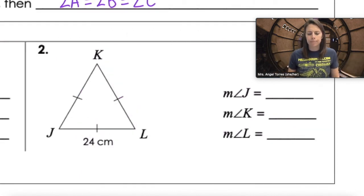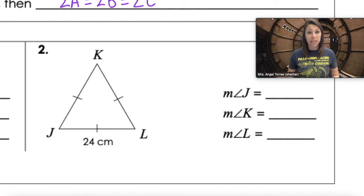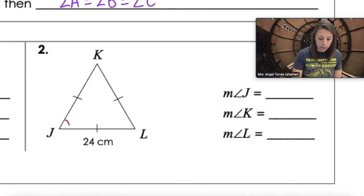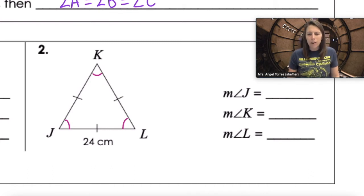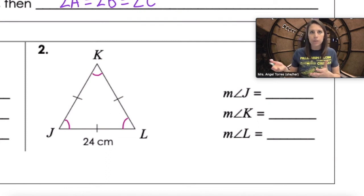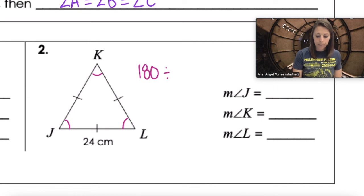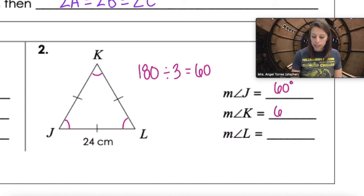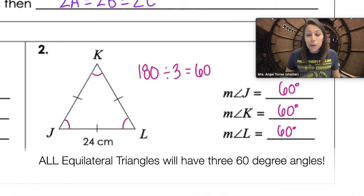In this triangle, we're given one side length and that all side lengths are equal, meaning it's equilateral. If it's equilateral, it's also equiangular, so angle J equals angle K equals angle L. Since all three angles are the same, we take 180 divided by three, which is 60. All equilateral triangles have three 60-degree angles.